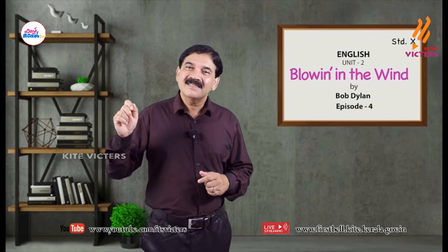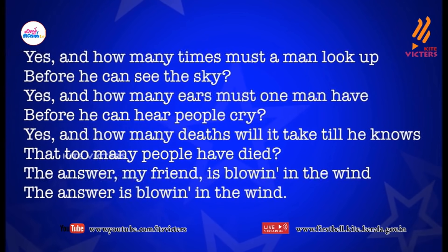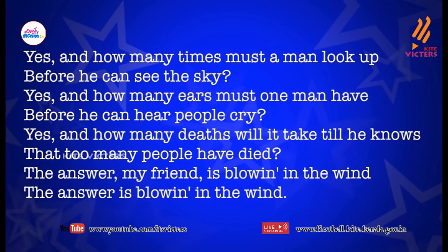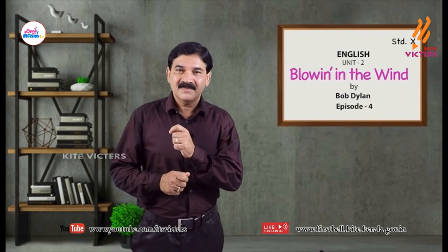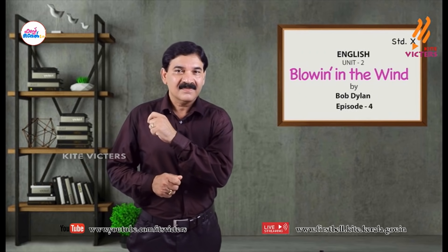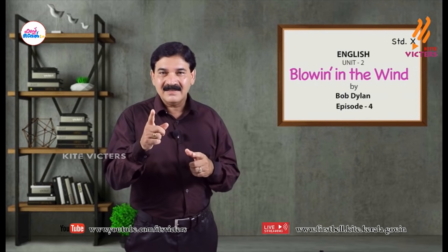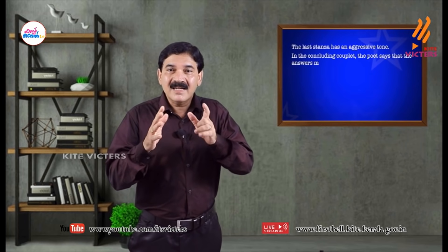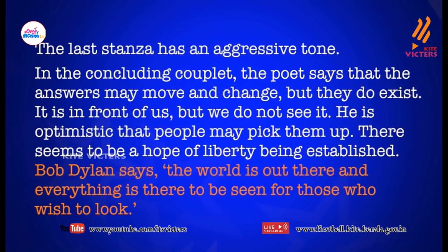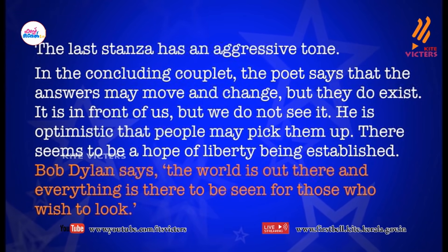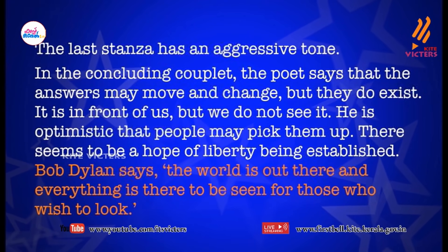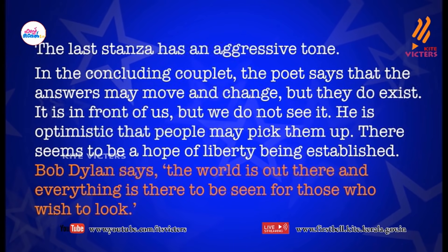Let's see what the poet says in the last part of the third stanza. What change does the poet notice in the tone towards the end of the stanza? We can see that the tone suddenly changes — it becomes aggressive now. In the concluding couplet, the poet says that the answers may move and change, but they do exist. They are in front of us, but we do not see them. The poet is optimistic here.